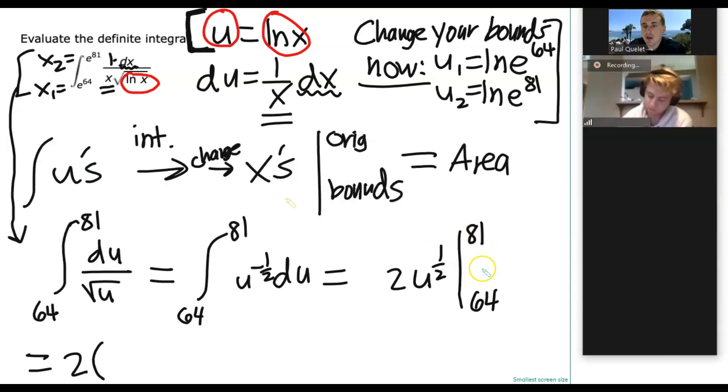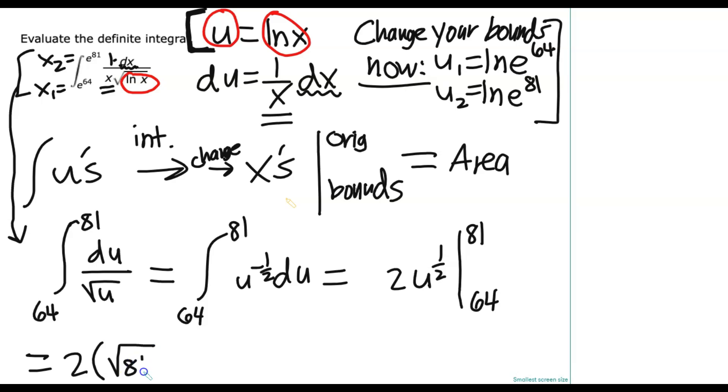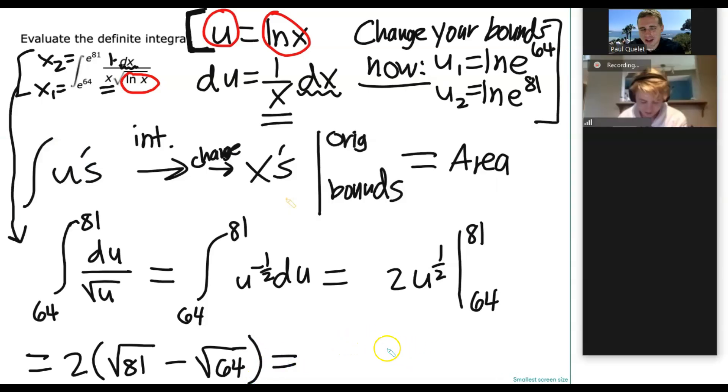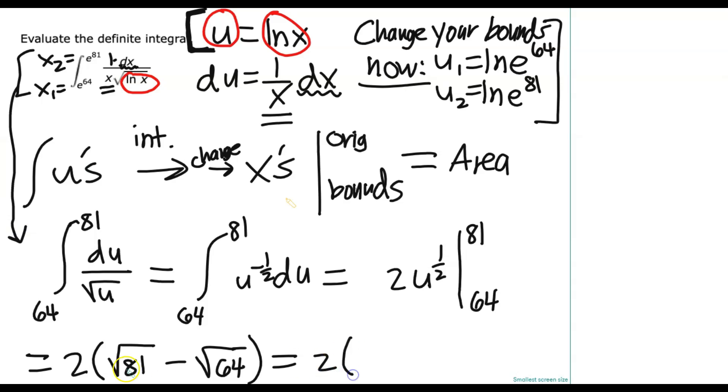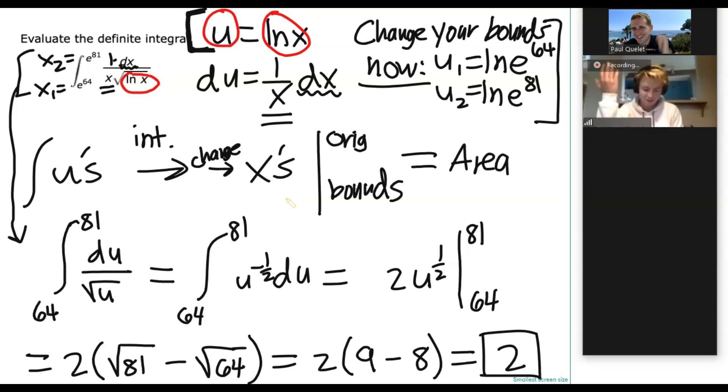So this 2 can just be left out front. And then we can do the calculation. Because, by the way, whenever you have bounds, it's so-called upper minus lower. Now u to the 1 half is also known as square root. So can't we just do square root of 81 minus the square root of 64? That's not so bad. I think we can handle that. So 2 times square root of 81 is 9, and then square root of 64 is 8. 9 minus 8 is 1 times 2. 2 on the nose. It makes it so much easier. Like doing the whole u-sub thing. It makes a complicated looking integral a lot easier. That's for sure.